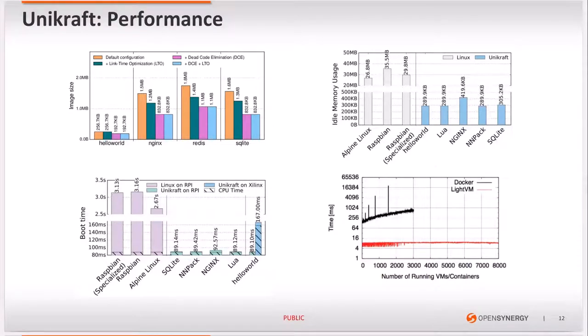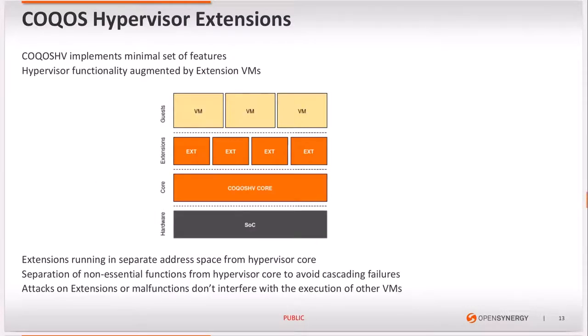I'll now switch back to the Cocos Hypervisor and discuss an important part of our architecture: Cocos Hypervisor Extensions. These allow us to delegate functionality from the hypervisor to extension VMs. In order to fulfill its security and safety requirements, the hypervisor core implements only the smallest set of features required to provide isolated virtualization, and non-essential functionality is implemented in extension VMs executing in a separate address space from the hypervisor core.